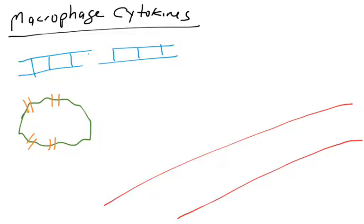Here's a macrophage in a tissue — in the connective tissue of some part of the body, possibly the skin. I've drawn an epithelial barrier in blue and a blood vessel in red. There's the macrophage, and it has its toll-like receptors on its surface in the plasma membrane.